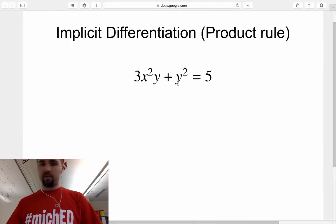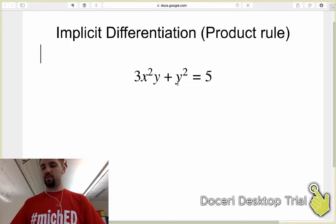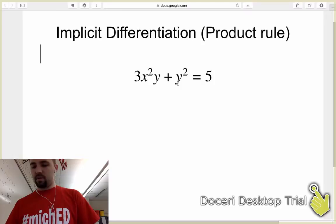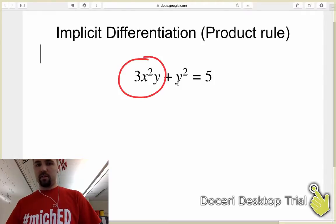So in this problem, we have 3x²y + y² = 5, and what students will typically do is not apply the product rule right here to this 3x²y.